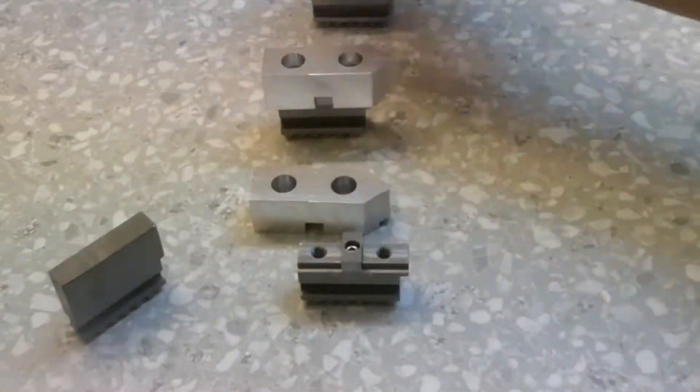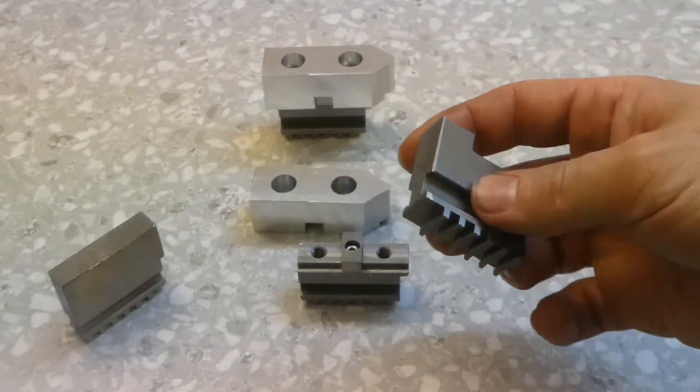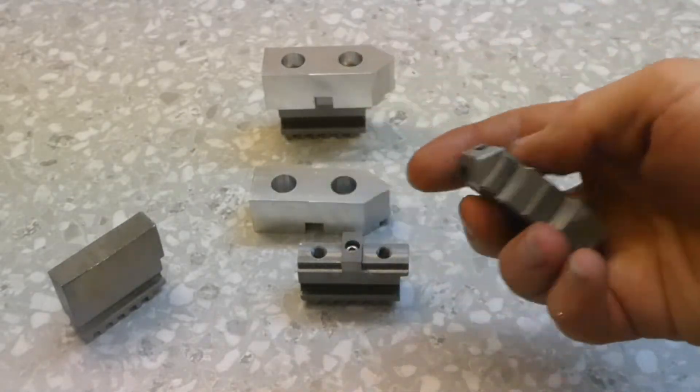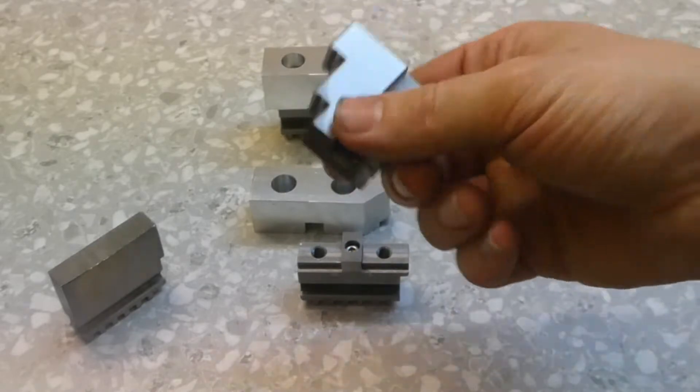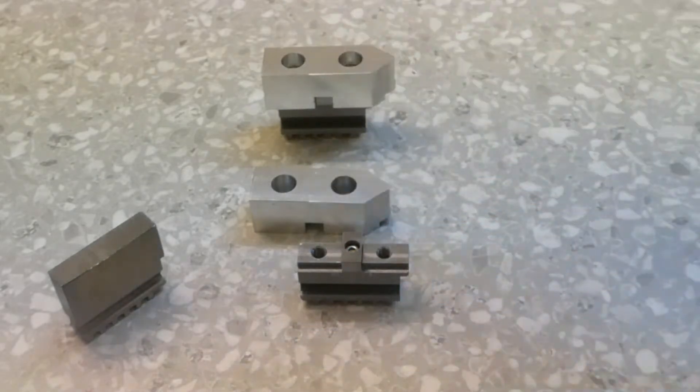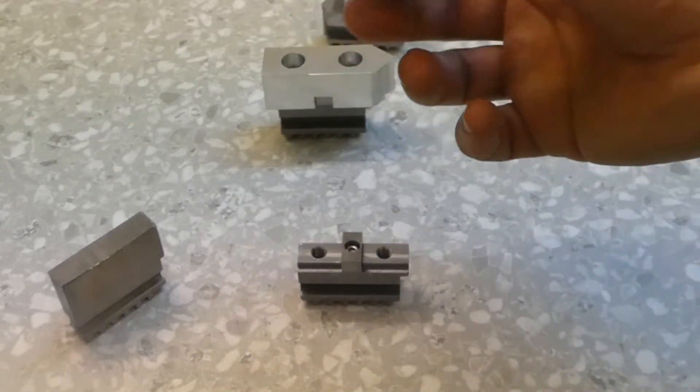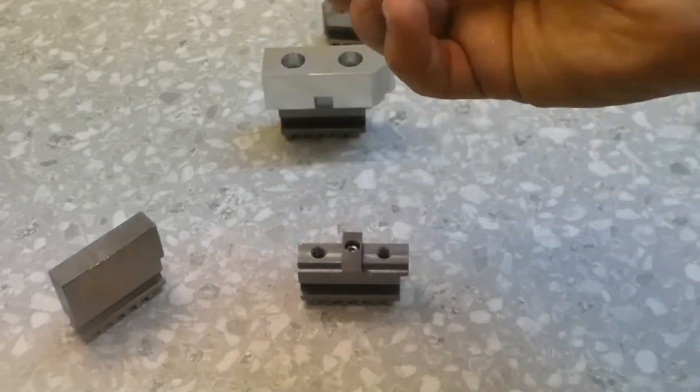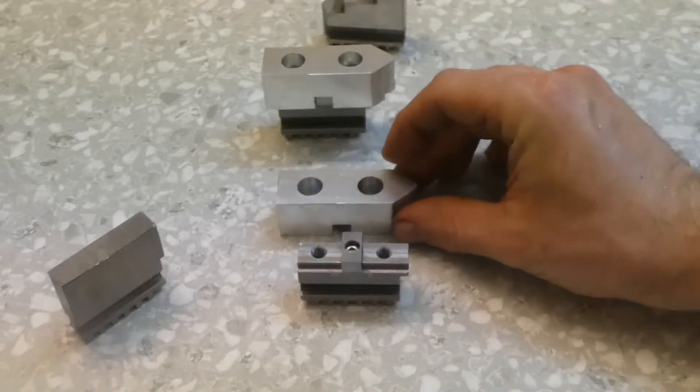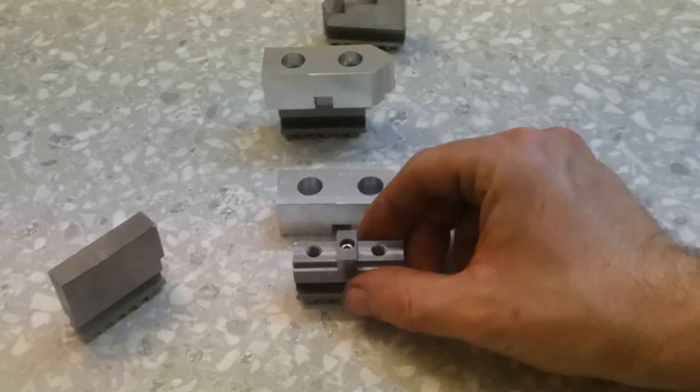And the good point is that with this one, when we are turning aluminum, you can mark your parts because this is harder than the aluminum. But with this one, no. With this one we don't have that problem because this is aluminum itself, so it's safer when we don't want to mark the parts.